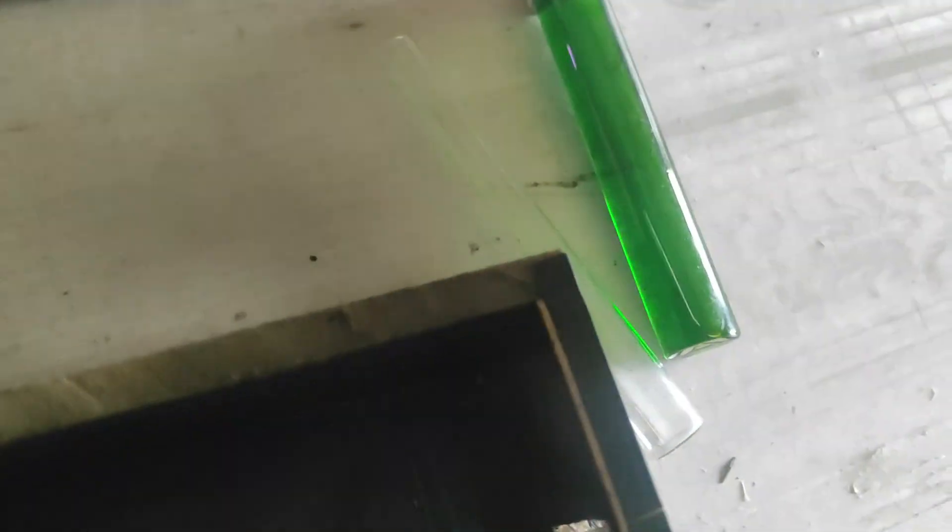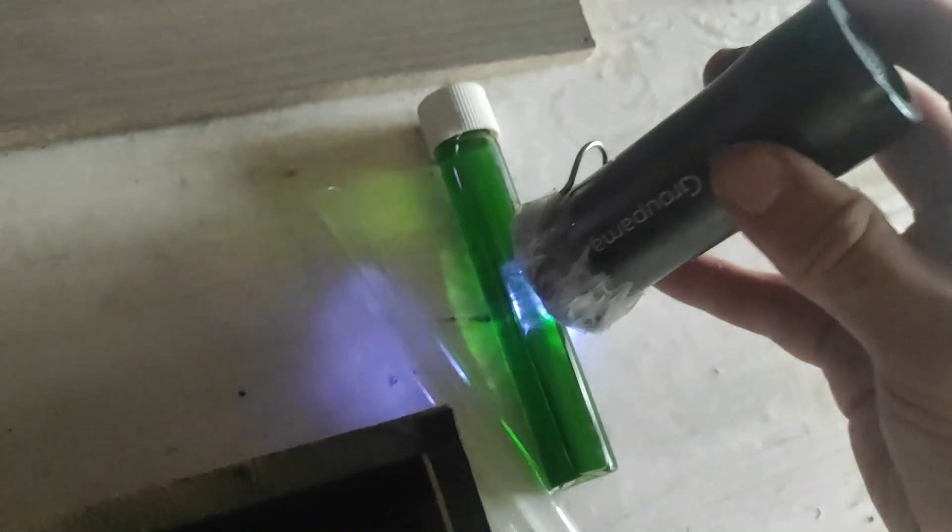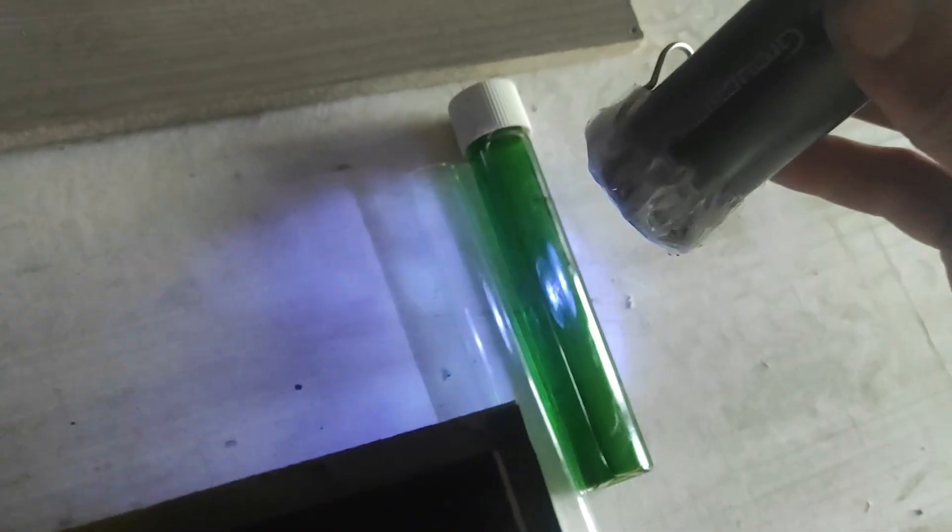Now we're going to measure the fluorescent emission of the chlorophyll, and to do that, I will use my false UV lamp from earlier. As you can see, we don't observe anything in the sunlight, so we need to go in a dark place.